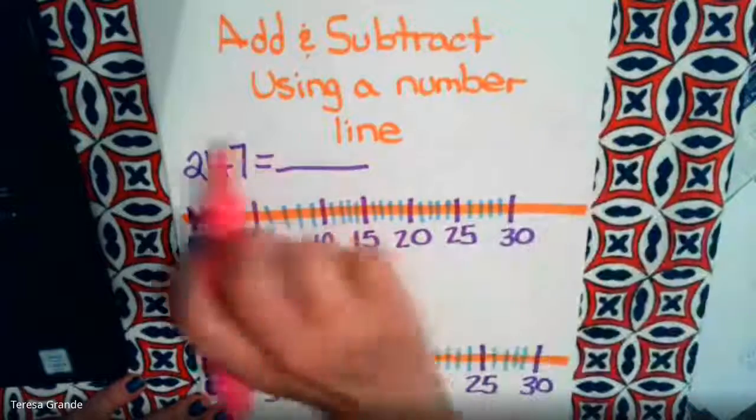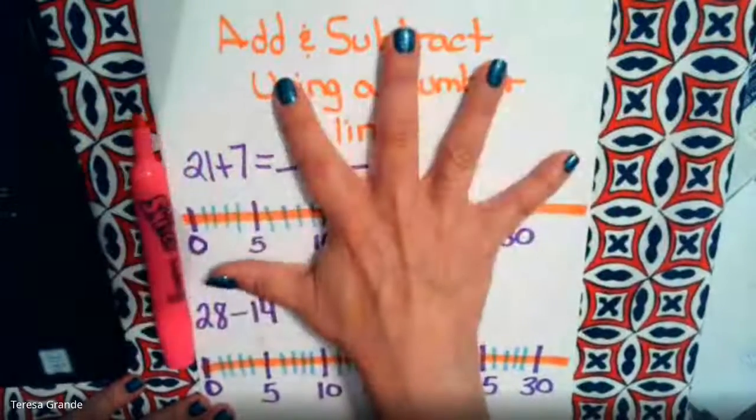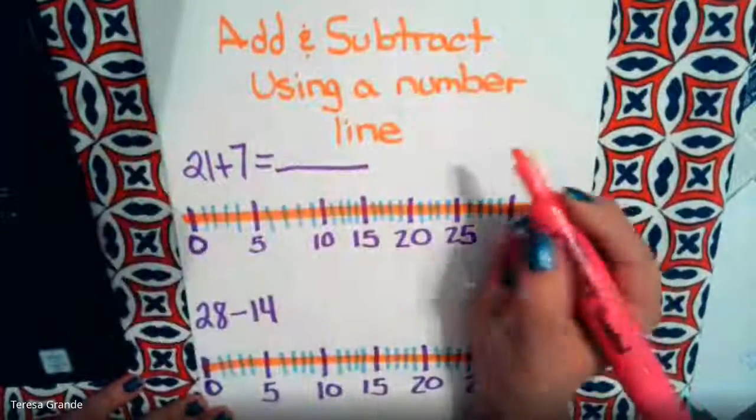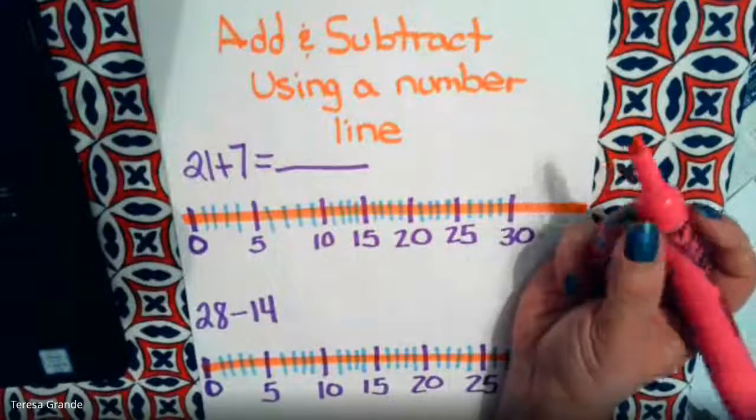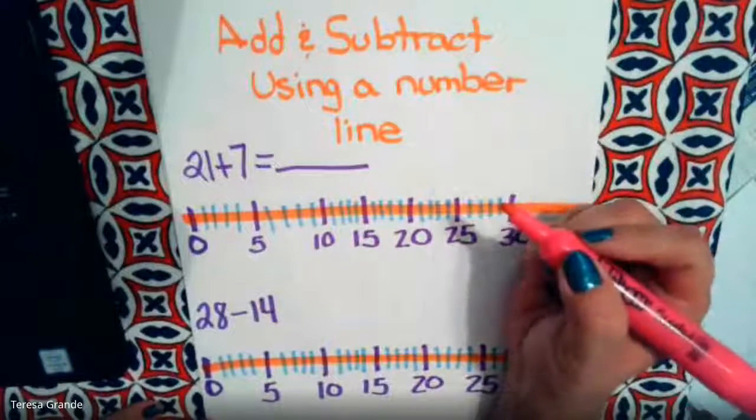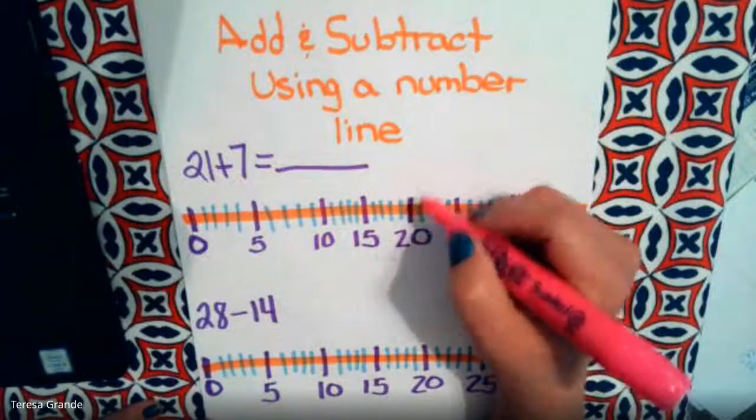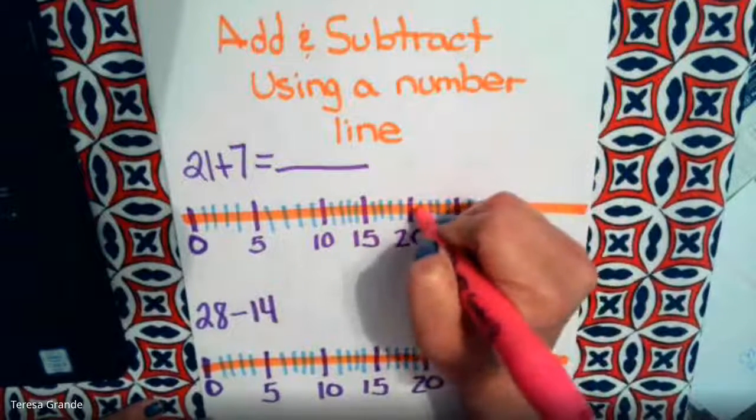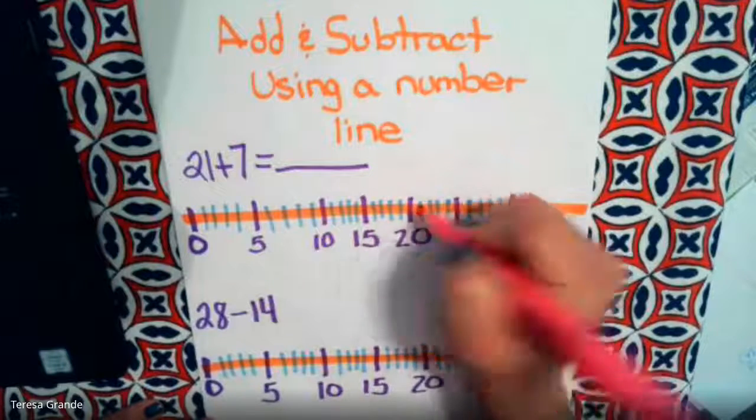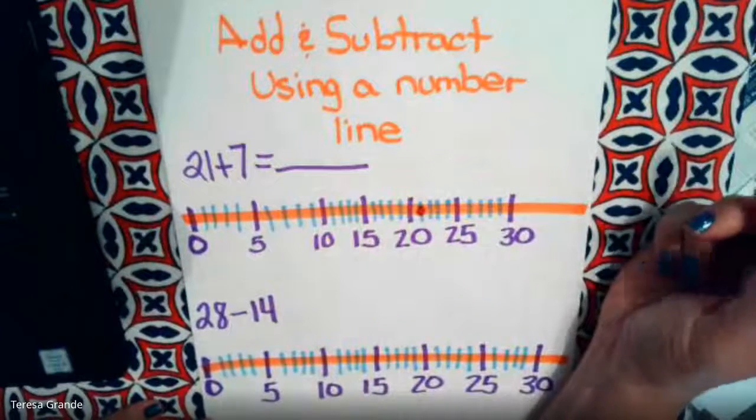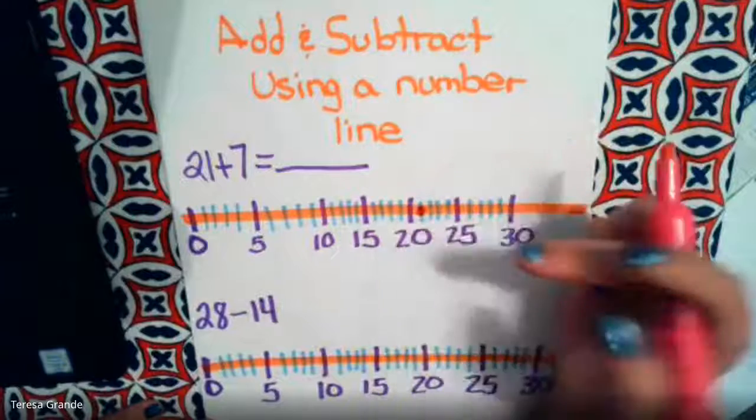So let's start at the number 21. Where is 21 on this number line? Here's 20, so we need to go one more, so 21 is right here.